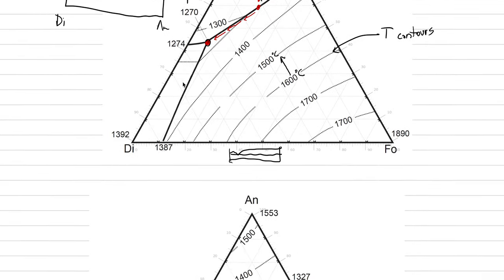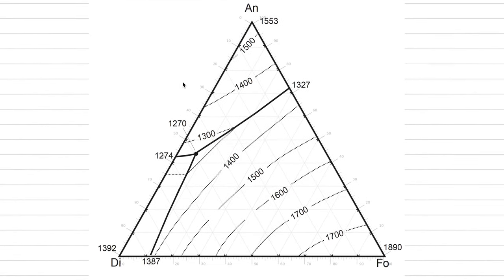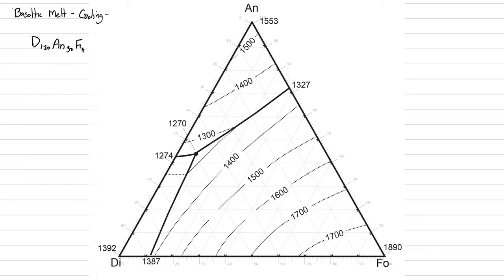We need to do that now actually in practice. Read the textbook if this is really causing you to stumble, because it is complicated and there are students that struggle with this a lot. We're going to do a basaltic melt composition and we're going to do cooling again. Our composition is going to be diopside 20, anorthite 30, forsterite 50. The first step is finding where that bulk rock composition, or bulk magma composition is, and you do that on a ternary diagram — diopside 20.